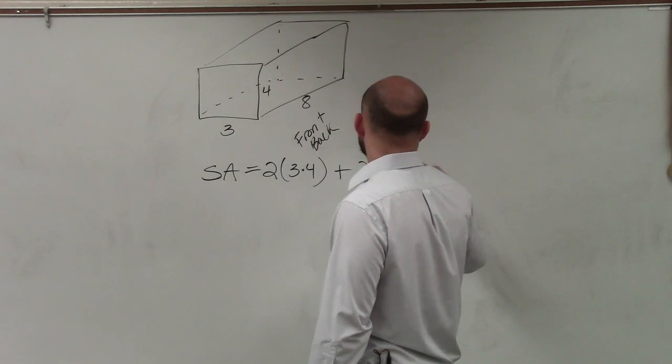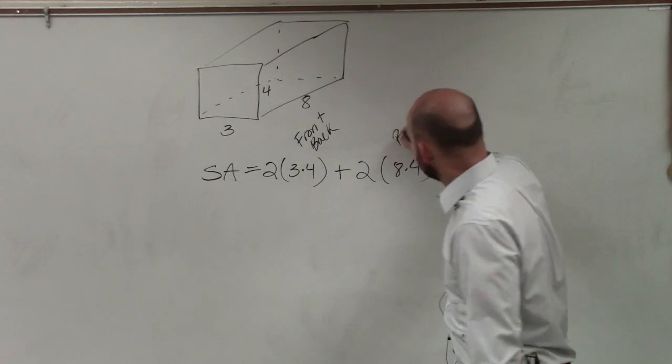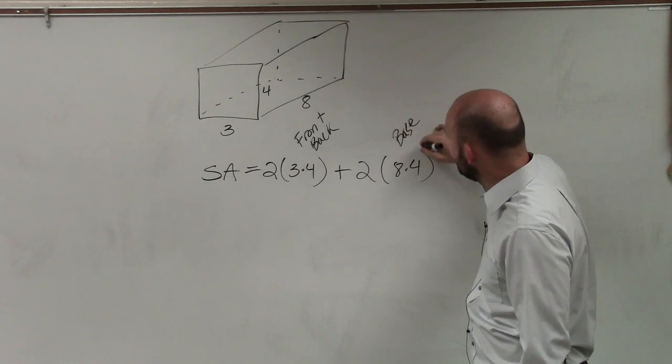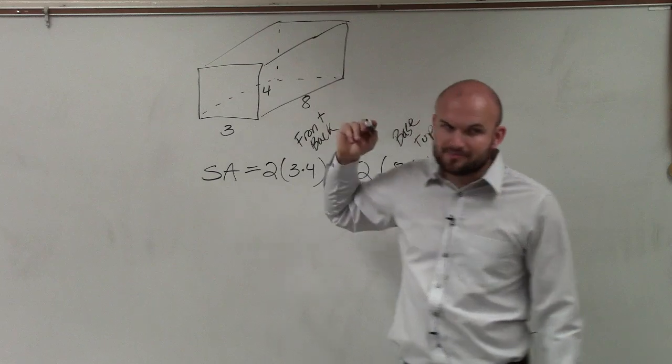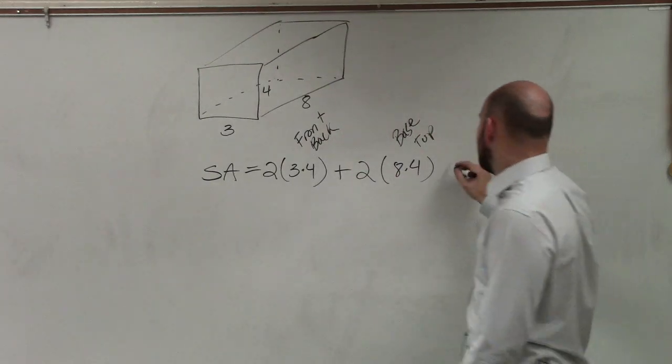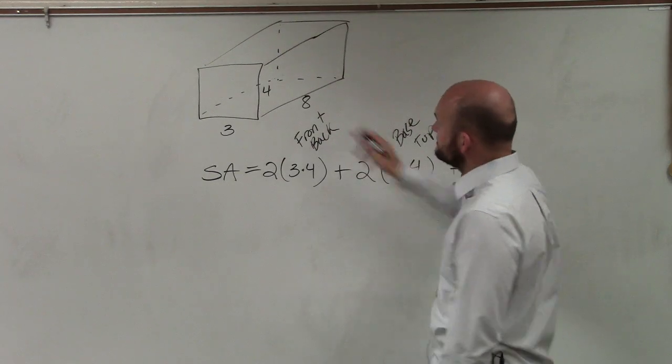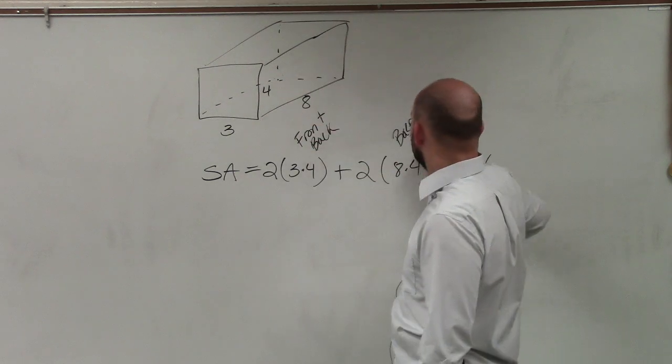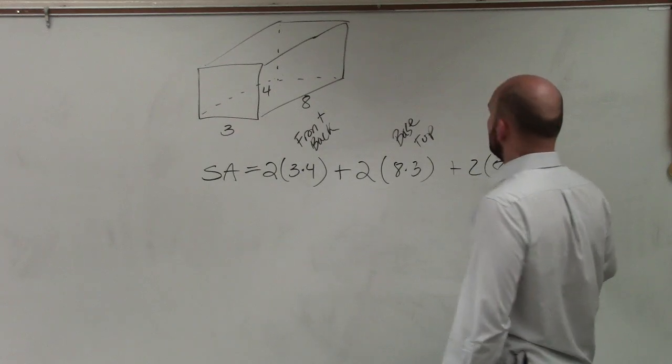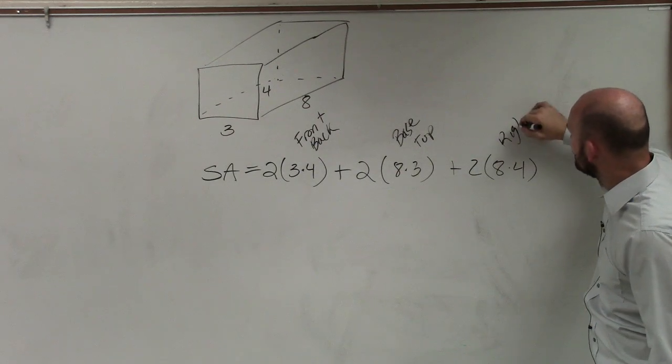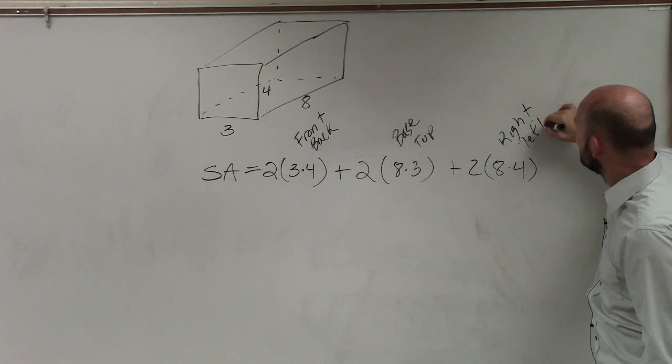Then we add that to 2. And then we'll do 8 times 4, which represents the area of the base and the top. Here's the base. And here's the top side. Then I can add that to 2 times. I'm sorry. 3 times 8. That was 3 times 8. And then this will be 8 times 4, which represents the area of the right side and the left side.